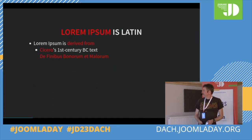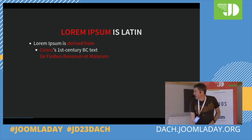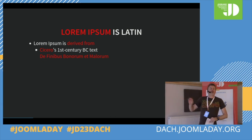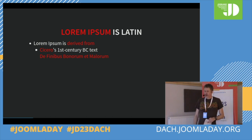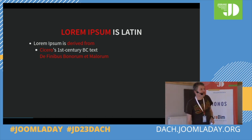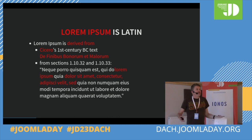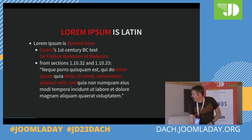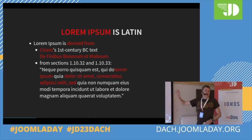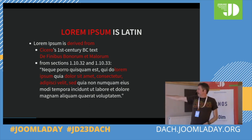It's derived from a book by Cicero called De Finibus Bonorum et Malorum. Bonorum means something good, and malorum means something bad, so probably the book of good and bad. There's a section in it where you can see it's 'do lorem' instead of 'lorem' — the original text starts with 'do lorem.'